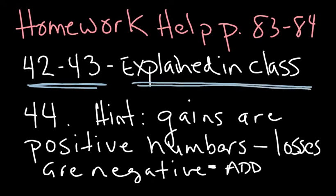Number 44, a gain in yardage on the football field is a positive number. A loss is a negative number. Add up the gains and losses to get the answer. Make sure you have a label on your answer.